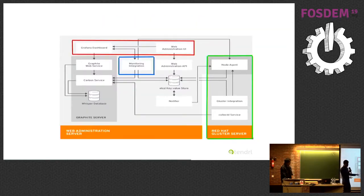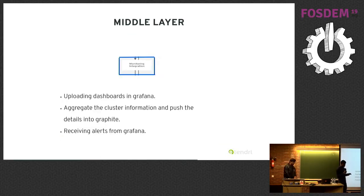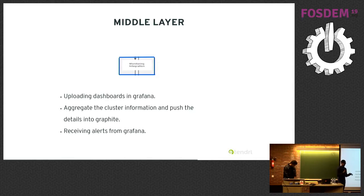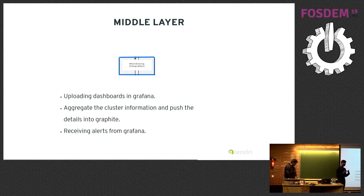Now we move to the second layer: the monitoring layer. The monitoring layer has one service called monitoring integration, which has three major responsibilities. First, it uploads the monitoring dashboard into Grafana. Second, it fetches the cluster topology from etcd and does some aggregation work — like from these many volumes, how many are up, and from these many bricks, how many are up and how many are down. Then it pushes those details into Graphite. Third, it receives alerts from Grafana and notifies the user via notifications.